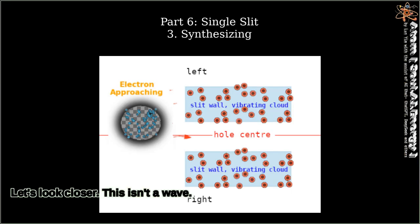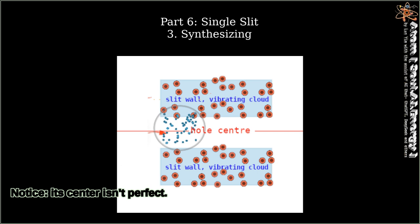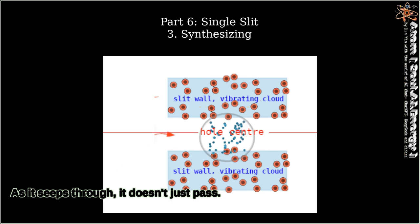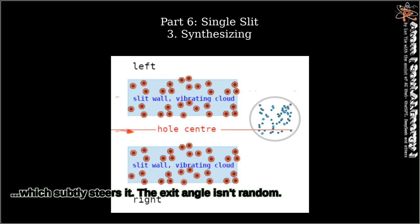Let's look closer. This isn't a wave. This is a particle with a soft, intelligent presence—its seep cloud. Notice, its center isn't perfect. And the slit isn't empty. It's lined with atoms. As it seeps through, it doesn't just pass. It negotiates with the very atoms of the slit. More overlap on one side means a stronger interaction, which subtly steers it. The exit angle isn't random. It's the direct result of this microscopic conversation.